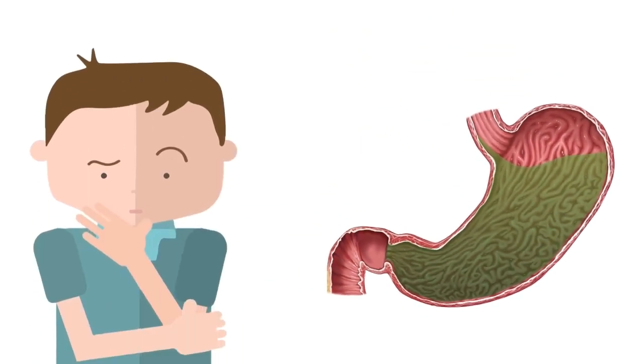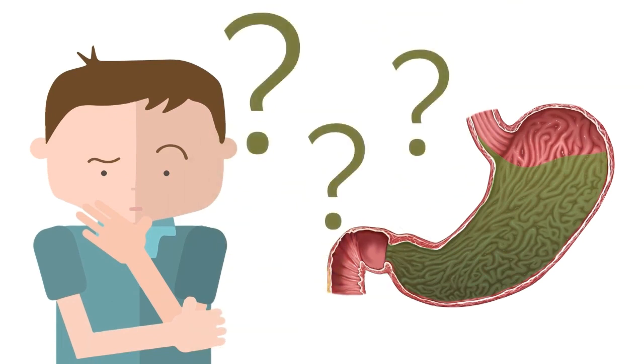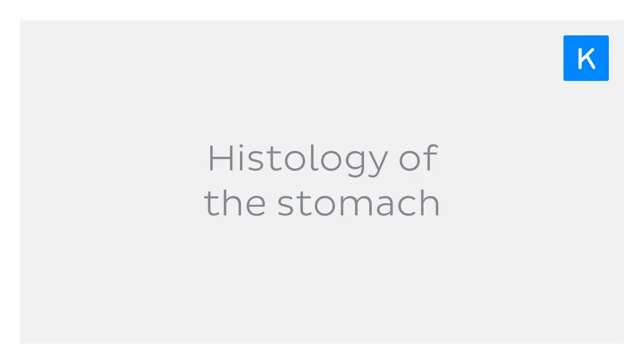But where does all this gastric juice come from? Well today we're going to find out. Let's have a look at the cells and tissues that make up the wall of the stomach. It's time to explore the histology of the stomach.